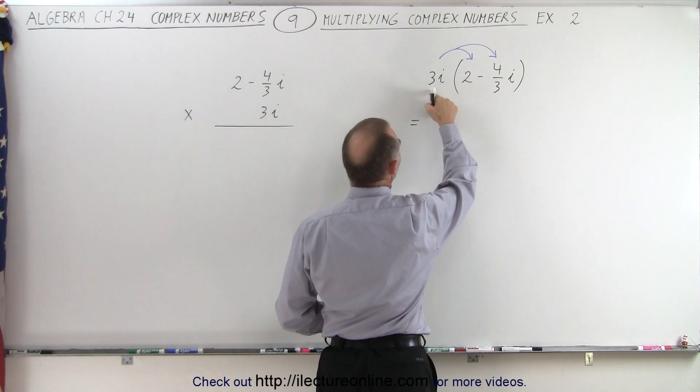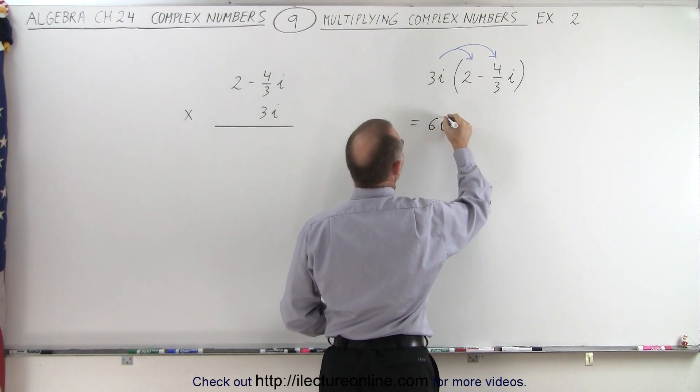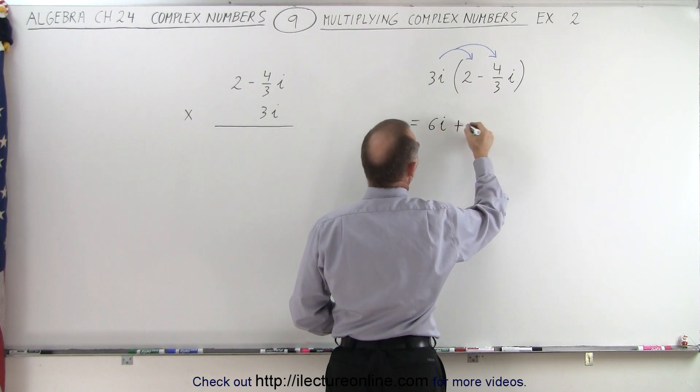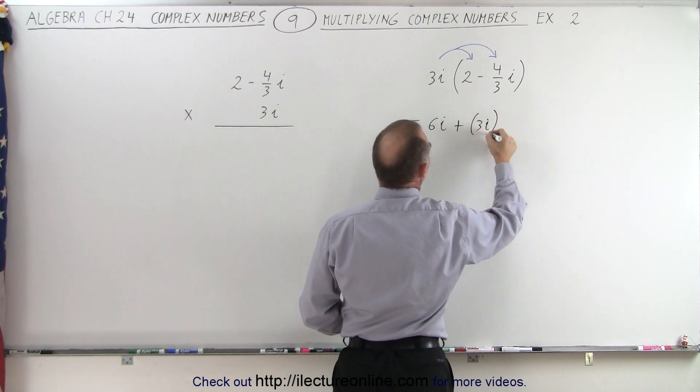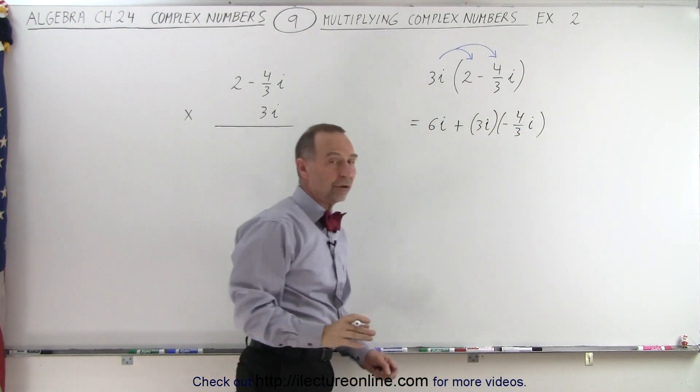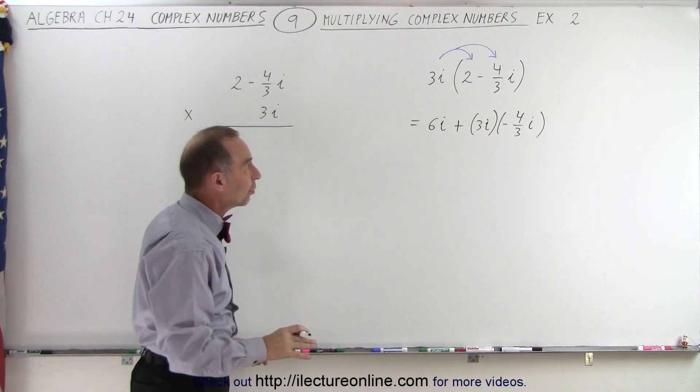So here we have 3i times 2, that gives us 6i, and here we have 3i times the negative 4/3 i, so it's plus 3i times the negative 4/3 i. And I like to write it like this first, until we get kind of used to it.